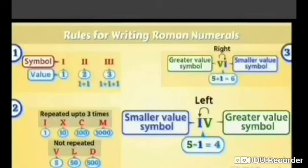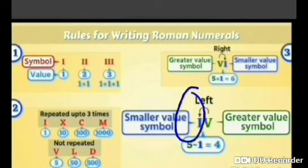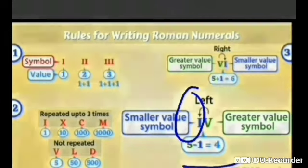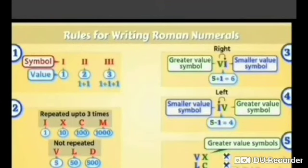The fourth rule says that if the symbol of a smaller value is written to the left of the symbol of a greater value, then this value will be subtracted from the greater symbol. That means 5 minus 1 will give me 4. Also, the symbols V, L, D, X, C, M are never written on the left side of the greater symbol. So that means these symbols are never subtracted.